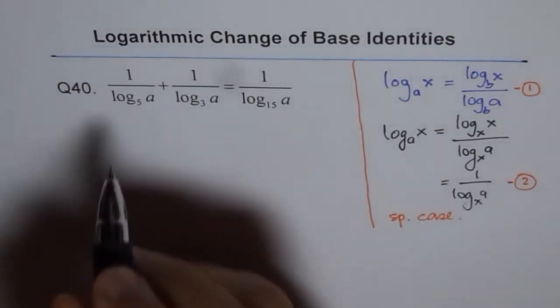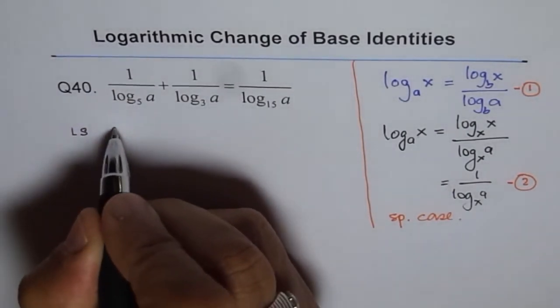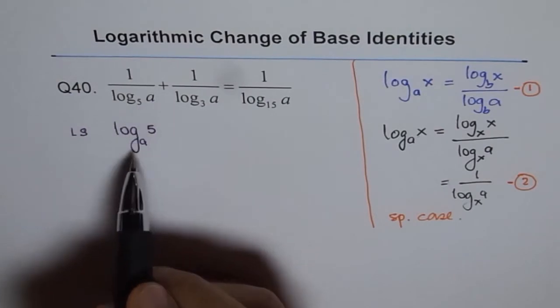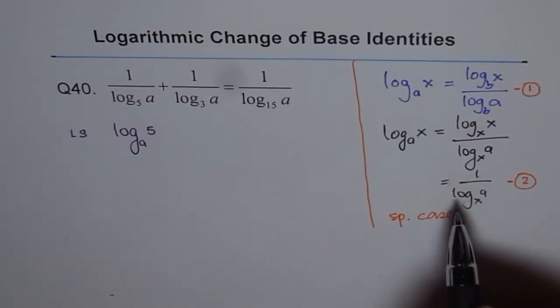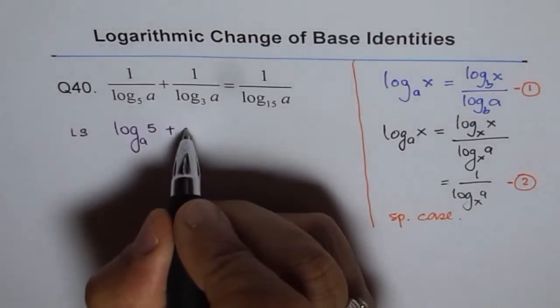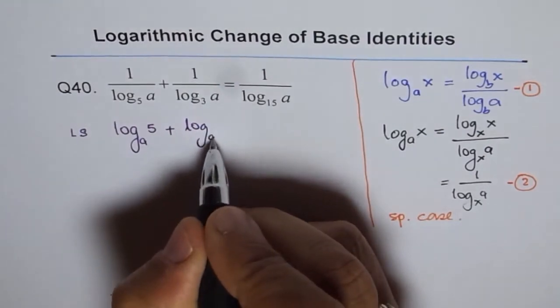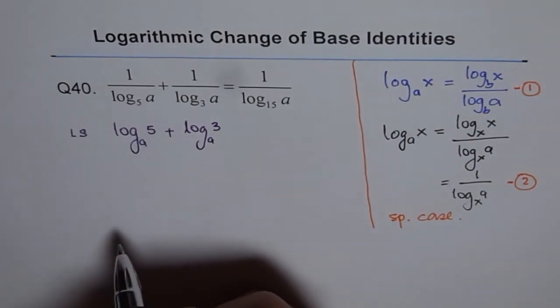I can write the left side as log_a(5). Using this property, 1 over this becomes this. This is the most important part to understand at this stage, which is why I've taken similar questions in 40, 41, and so on. The second term becomes log_a(3) by changing the base from 3 to a, so they get interchanged. That's the left side.